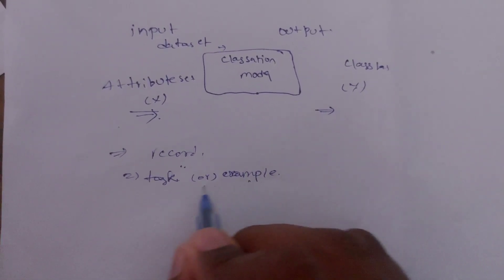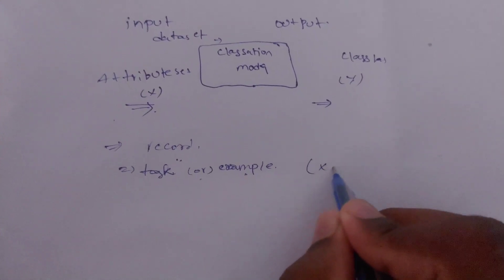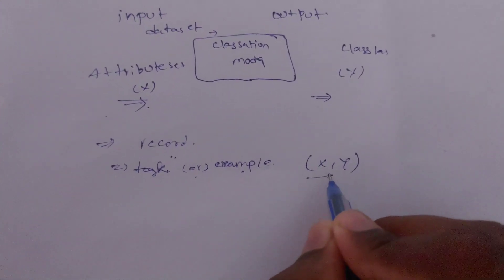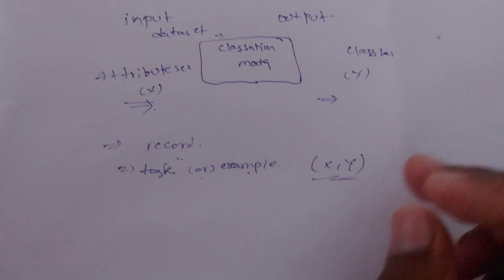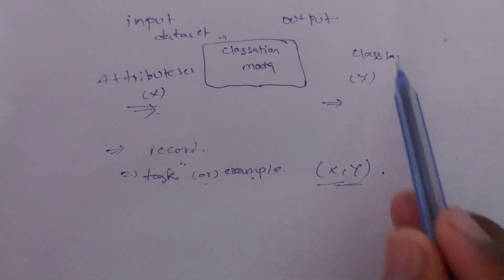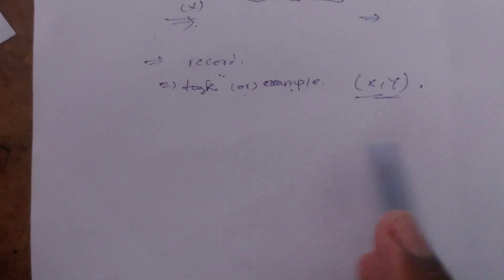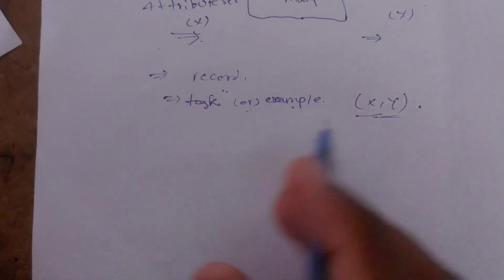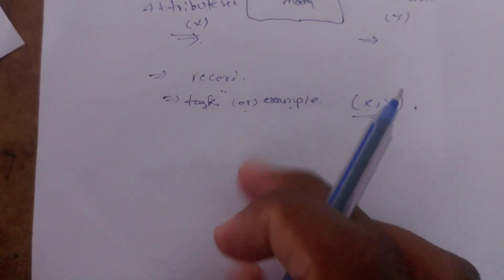The task is in a tuples format — a tuple of (X, Y), where X is the attribute set and Y is the class label. We have a table in tabular format.